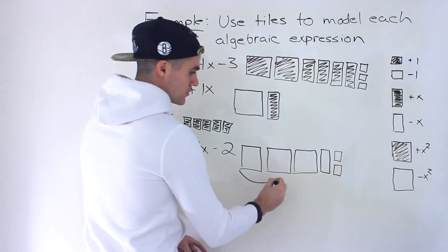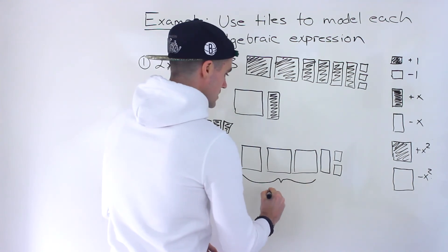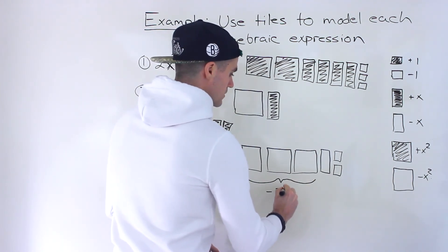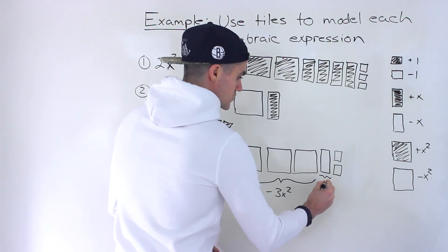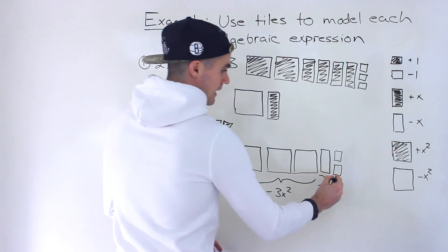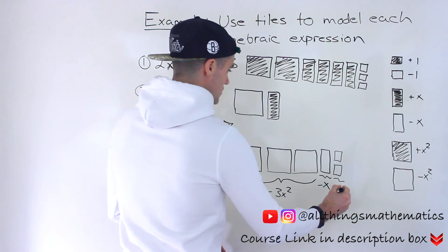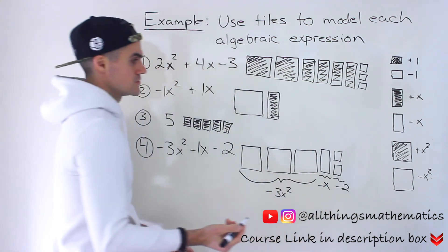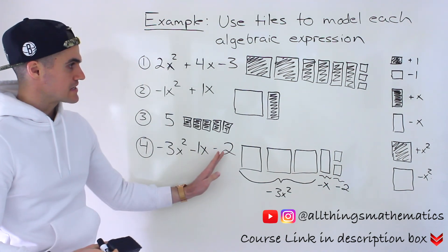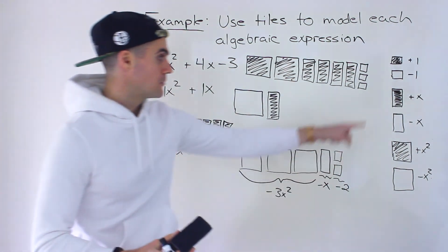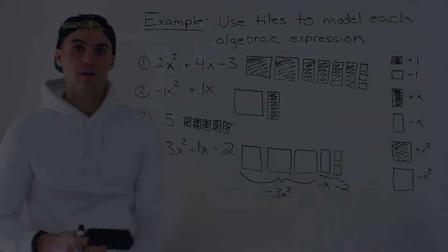Okay. So this portion over here is the minus 3x squared. This rectangle over here represents the minus 1x or the minus x. And then these small squares here represent the minus 2. So you pretty much just want to look at each term separately and then match them up accordingly to these different tiles.